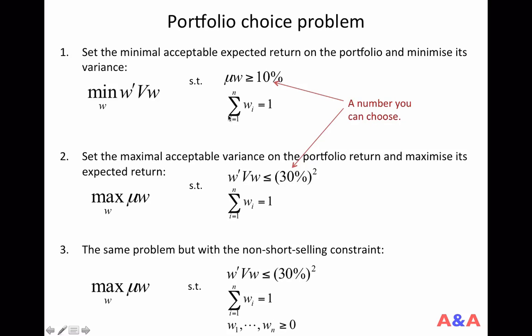In the above two problems, although the weights sum up to 1, some of the weights can be actually negative. Suppose you invest 10,000 pounds. Suppose W1 equals 0.1. That means that 10% of your money is invested in asset 1. Now, suppose W2 is negative 0.1.